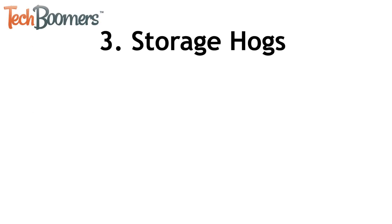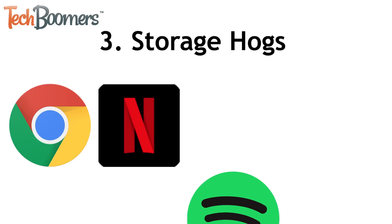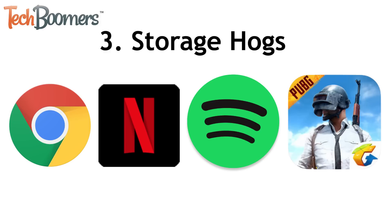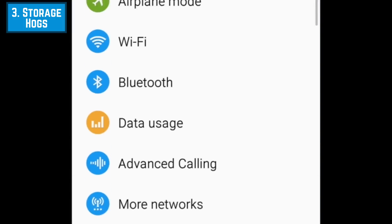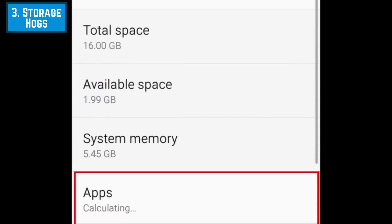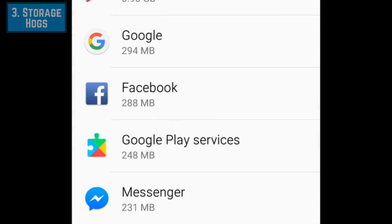The third type of app you should delete are apps that hog your device's storage space. Apps that commonly take up the most amount of storage are web browsers like Google Chrome, media streaming apps like Netflix or Spotify, and gaming apps like PUBG. You can see which apps take up the most storage space in your Android settings. Open Settings, then scroll down and select Storage, then tap Apps. Apps that use the most storage will be at the top of the list.